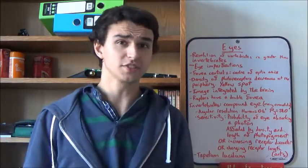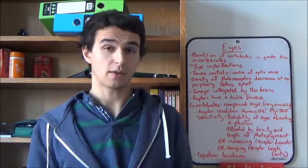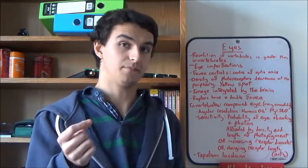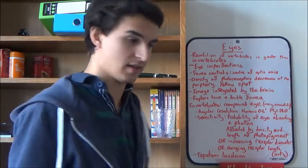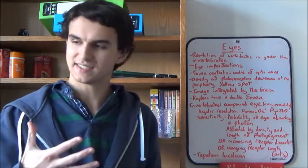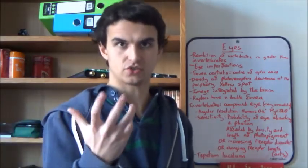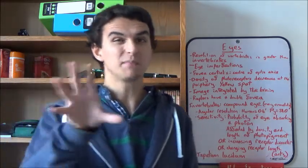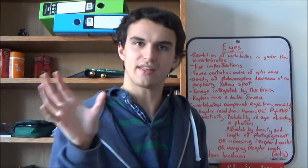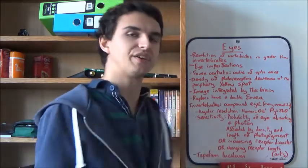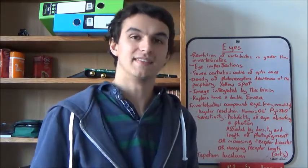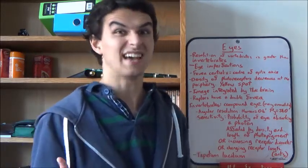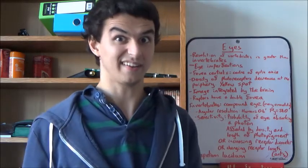For the fovea centralis, there's also something which we call the yellow spot. And we call it the yellow spot because there's very few blue receptors there. Blue cone receptors. And that is thought to act as a protection to the fovea centralis from UV radiation. Obviously UV and blue light are relatively close together compared to the red and green photoreceptors. So that's probably why there's less of them near the fovea centralis at the centre of the optical axis, which we need to protect because that's a really important part of the eye.